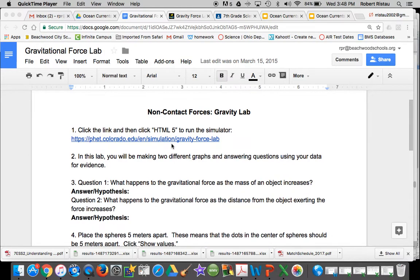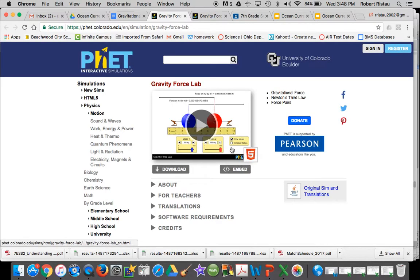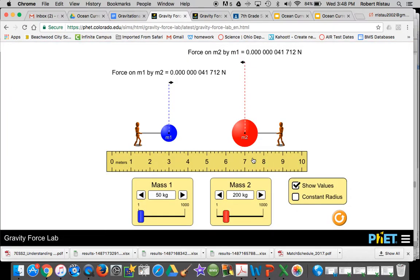On the document it has the link to the lab. When you click on the link and it takes you to the website, click on the little 5 down here and that will open up the PhET simulator here for you. If it doesn't already have this button checked that says show values, please check that button for show values.